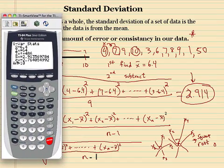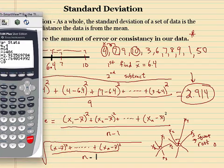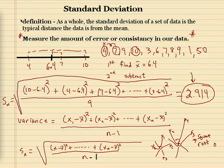I want to note something here — see this number that divides by n? That is the population standard deviation, meaning everybody. If you knew everyone's variance it would be more accurate. But since you've taken a sample, the estimate of variance is a little worse because you have fewer people than the whole population — which is an idea in statistics we'll talk about a lot later.